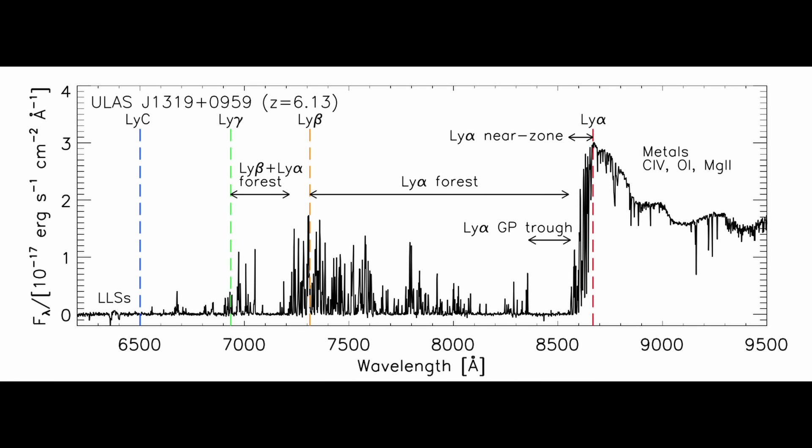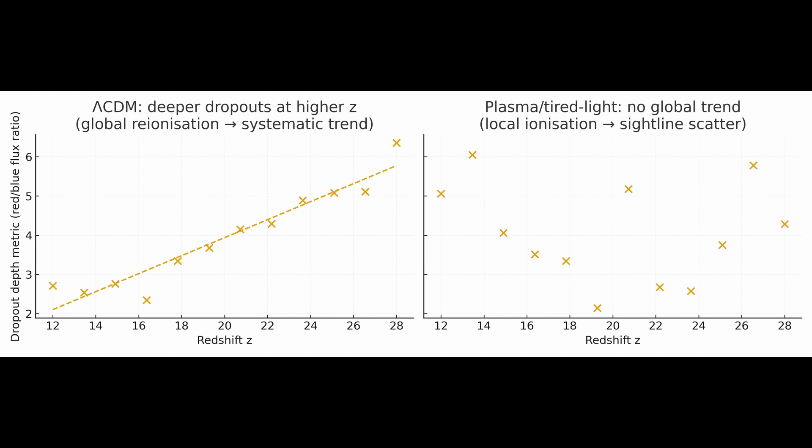That's why spectroscopy is essential. Only a spectrum can reveal the true shape of the break: the damping wings, the gradual recovery, the fingerprint of re-ionization itself. And that's what makes it the first great test. In plasma or tired-light cosmologies, there is no global re-ionization wall. Ionization is local, not universal. The break wouldn't evolve systematically with distance.